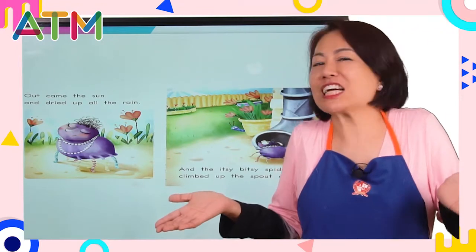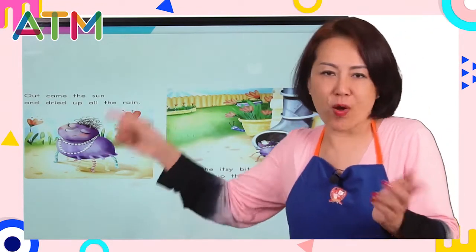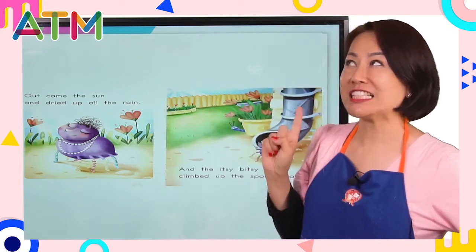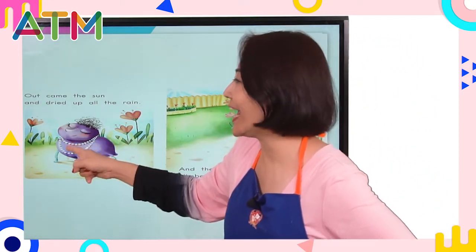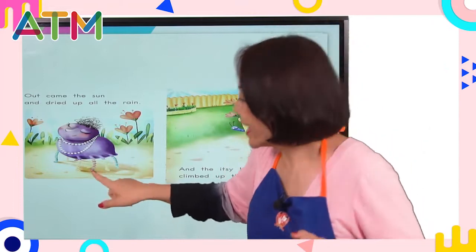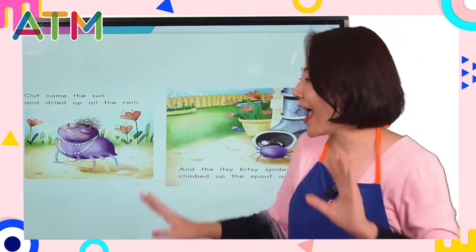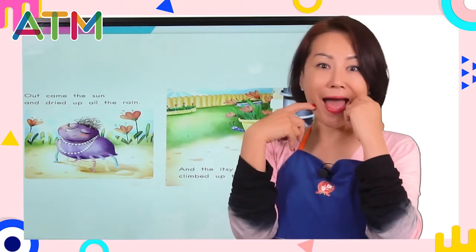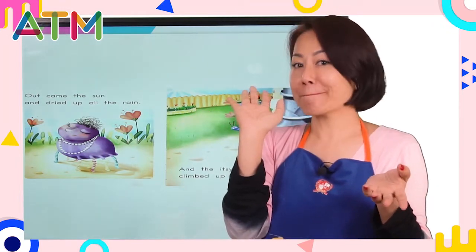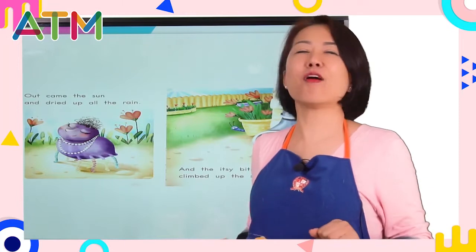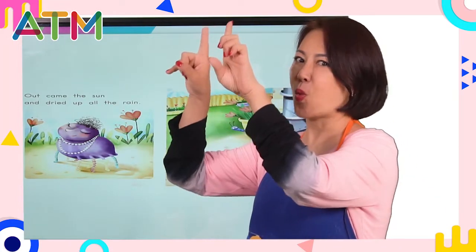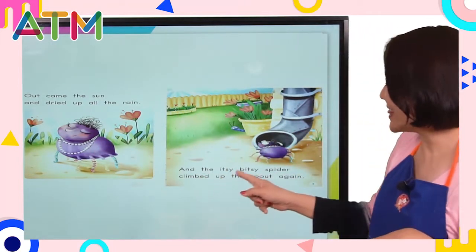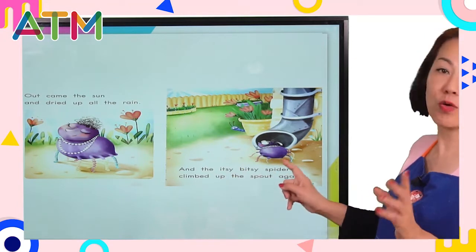So what could the spider do? She waited. She was a very smart spider. She waited till the sun came out. Out came the sun and dried out all the rain — you can see there is no water, everything is dry, and the spider is smiling. Why was she smiling? Because now she could climb up the water spout again! Out came the sun and dried out all the rain, and the Itsy Bitsy Spider climbed up the water spout again.